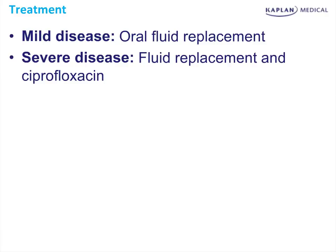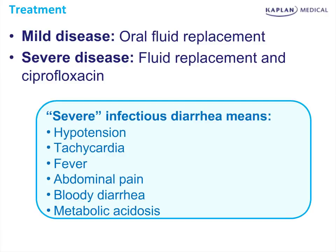Severe disease means you are hypotensive and tachycardic, have a fever, abdominal pain, blood in stool, and metabolic acidosis — because the colon is a bicarb-secreting organ. You don't need every single criterion, but two or three minimum. Just having tachycardia, or just a fever, or just abdominal pain is not enough. When it's clearly severe, the answer is ciprofloxacin or fluoroquinolone.